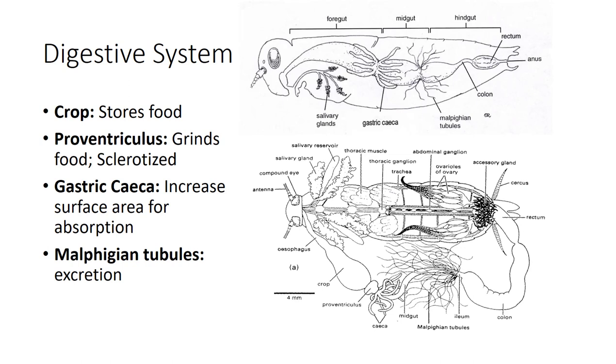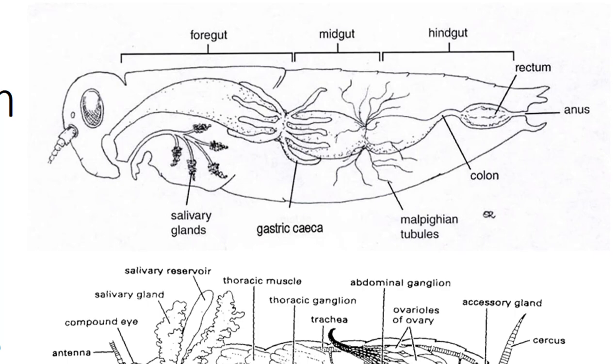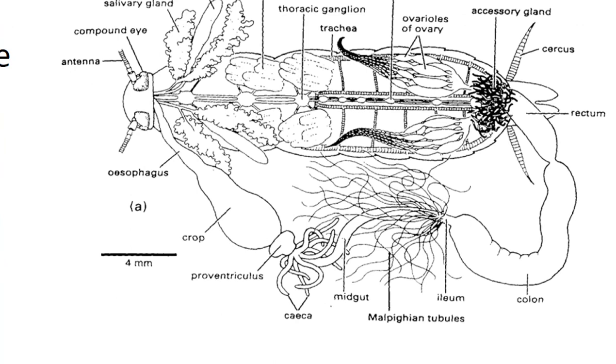The digestive system, sometimes referred to as the alimentary canal, is a long tube-like structure that runs from the mouth to the anus and is centrally located within the body cavity, or hemocele. The anterior-most region is called the foregut, or stomodeum, which includes the buccal cavity, the esophagus, and the crop, which stores food. The primary function of the foregut is to begin the breakdown of food particles and transport them to the next region, or midgut, or mesenteron.